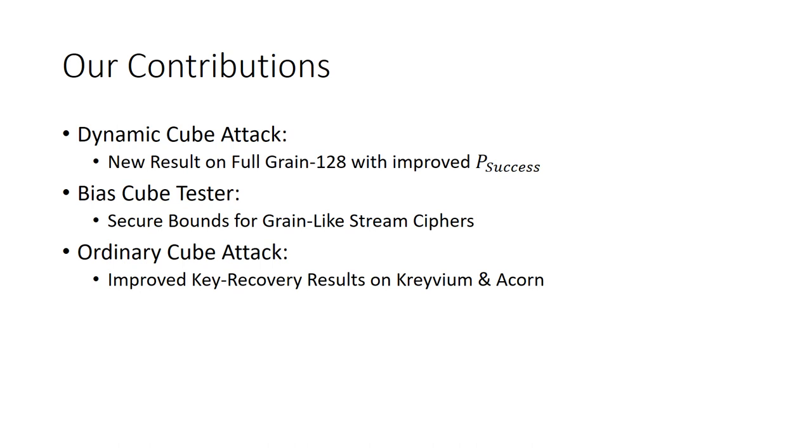To sum up, the contribution of this paper is that we have broadened the application of the division property technique. We link the division property with three cube attack variants, namely the dynamic cube attack, the bias cube tester, and the ordinary cube attack. More specifically, we propose a new dynamic cube attack on full Grain-128. In comparison with Dinur's original one, our attack has a much better success probability. For the bias cube tester, we draw secure bounds for grain-like stream ciphers. This is a promising tool for determining the number of initialization rounds for newly designed primitives. Finally, we give improved cube attack results on Trivium and Acorn.